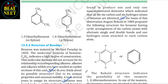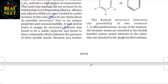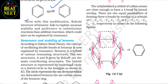On the basis of these observations, August Kekulé in 1865 proposed a cyclic arrangement of six carbon atoms with alternating single and double bonds and one hydrogen atom attached to each carbon. The Kekulé structure indicates the possibility of two isomeric 1,2-dibromobenzenes — in one isomer bromine atoms are attached to doubly bonded carbons, in the other to singly bonded carbons. However, benzene forms only one ortho disubstituted product. Kekulé overcame this by suggesting the concept of oscillating nature of double bonds in benzene.